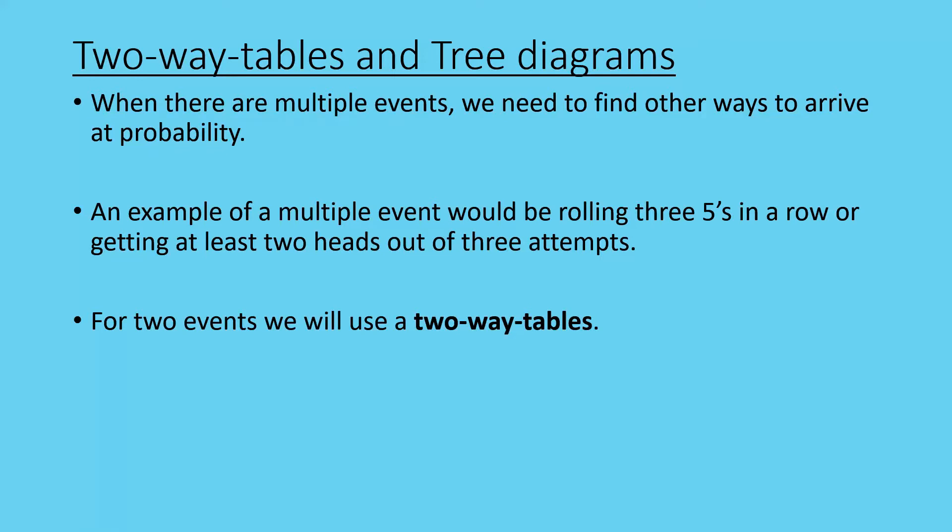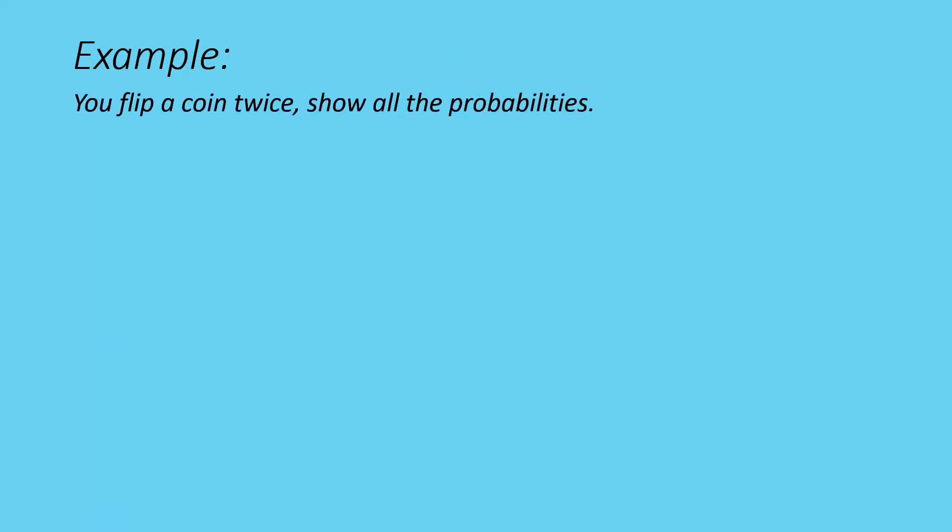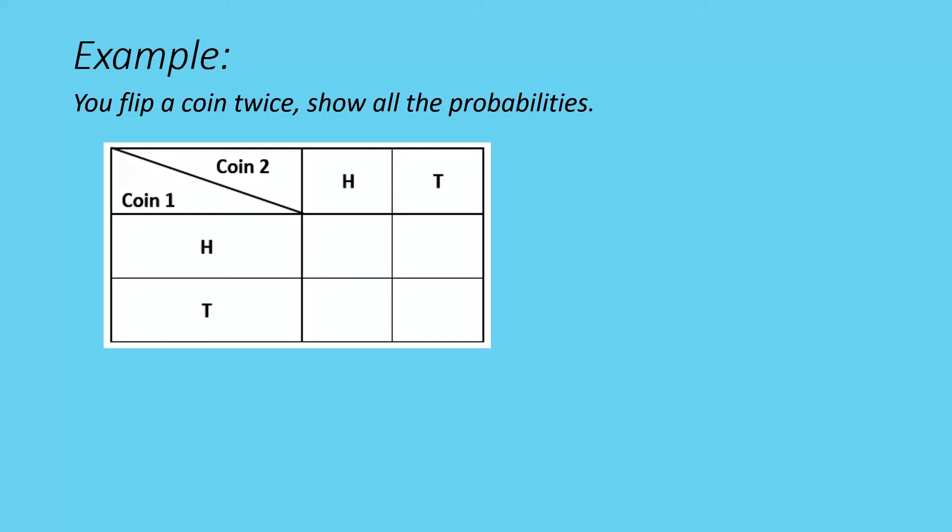Let's look at an example: you flip a coin twice. The first flip is event one and the second flip is event two. We lay them out in a table where coin one is the first flip and coin two is the second flip. The two possible outcomes are heads and tails for each coin.